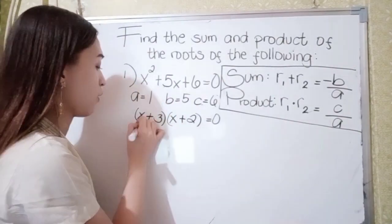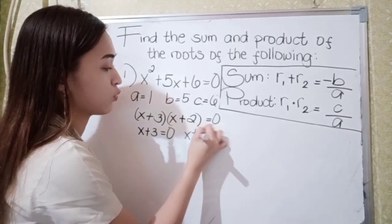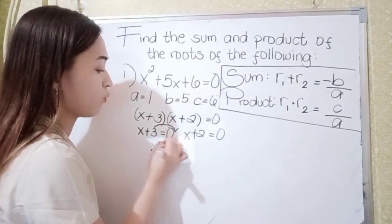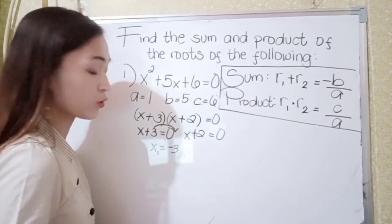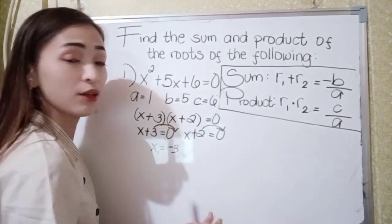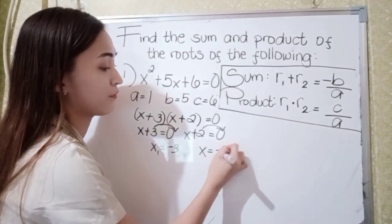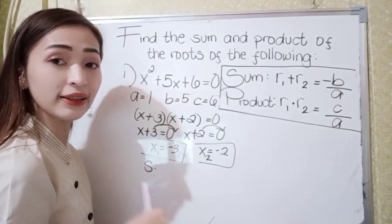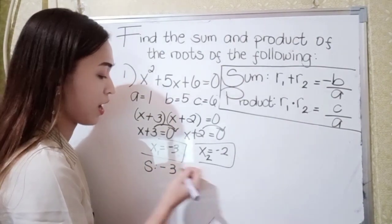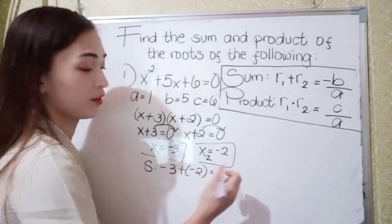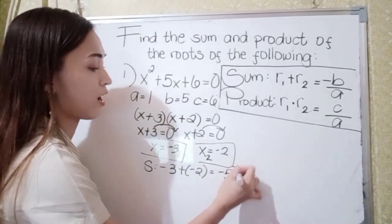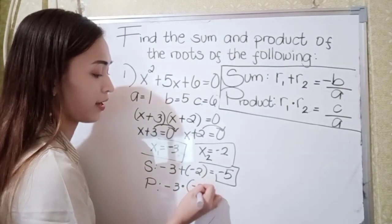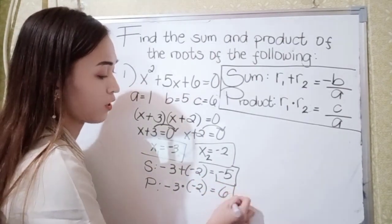Equate each factor to 0. So x plus 3 equals 0, and x plus 2 equals 0. Transposing, x equals negative 3, which is root 1. And x equals negative 2, which is root 2. To find the sum: negative 3 plus negative 2 is negative 5. For the product: negative 3 times negative 2 is positive 6.